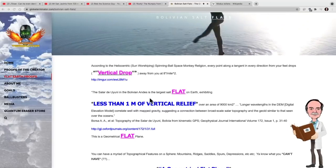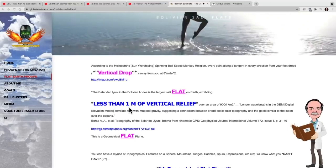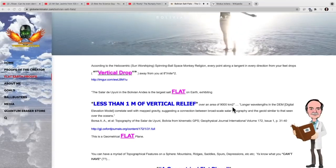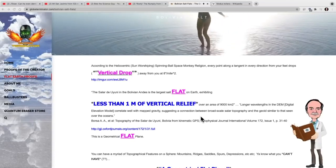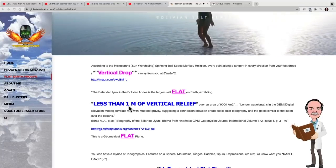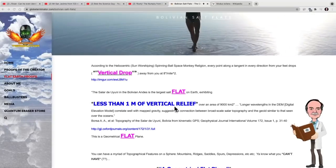Now, these Bolivian salt flats are exhibiting less than one meter of vertical relief over an area of 9,000 square kilometers. Now, again, what's wrong with this? Why does he say one meter of vertical relief?